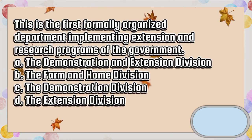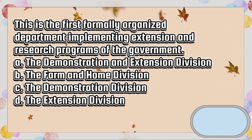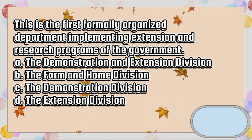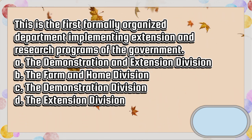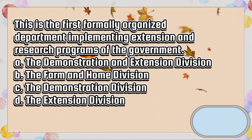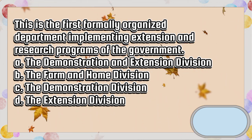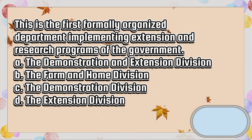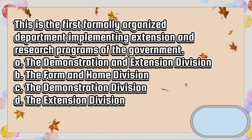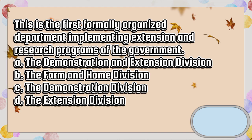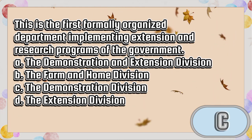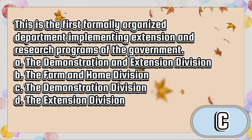This is the first formally organized department implementing extension and research programs of the government. A. The demonstration and extension division. B. The farm and home division. C. The demonstration division. D. The extension division. The answer is letter C.